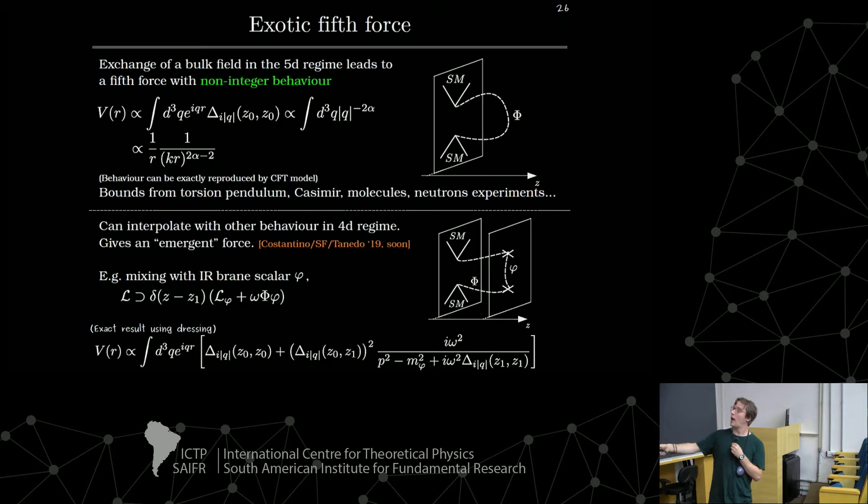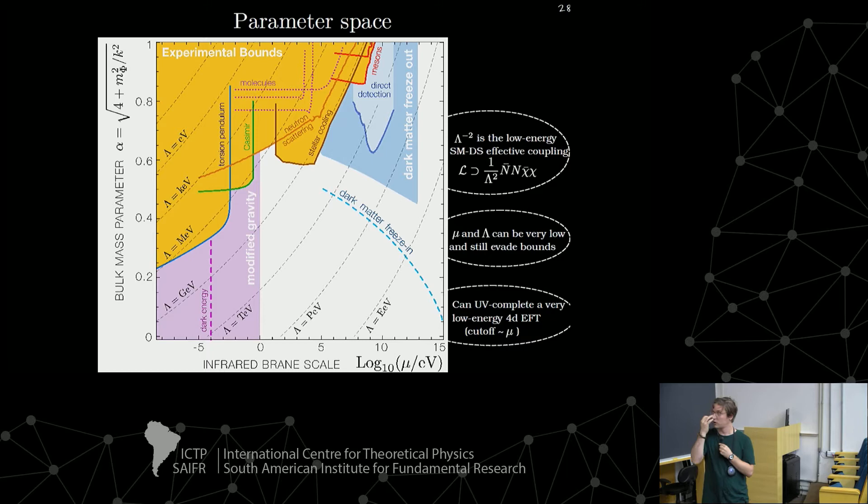And this long range force, you compute it by taking the Fourier transform of your propagator in the non-relativistic limit. And so what you get is a non-integer force, a force with a non-integer behavior in the distance between the nucleons. And so from this one can put plenty of bounds from torsion pendulum experiments, Casimir experiments, molecules, neutron experiments, and so on. I have a plot in the next slide.